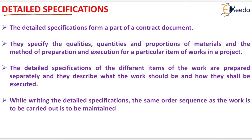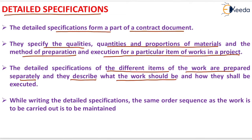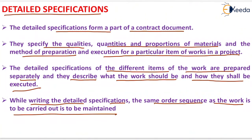The detailed specification forms a part of a contract document. They specify the qualities, quantities and proportions of material, and the method of preparation and execution for a particular item of work in a project. The detailed specifications of different items of work are prepared separately and describe what the work should be and how it shall be executed. While writing the detailed specification, the same order sequence as the work is to be carried out is to be maintained.